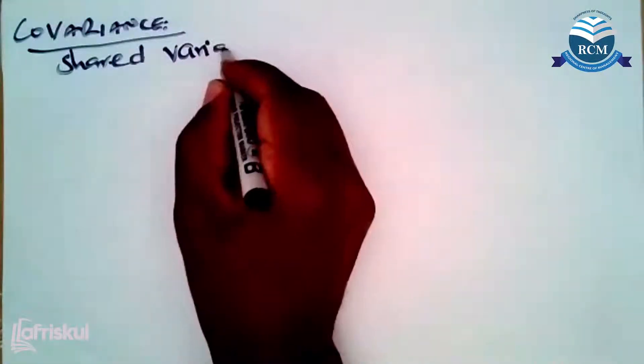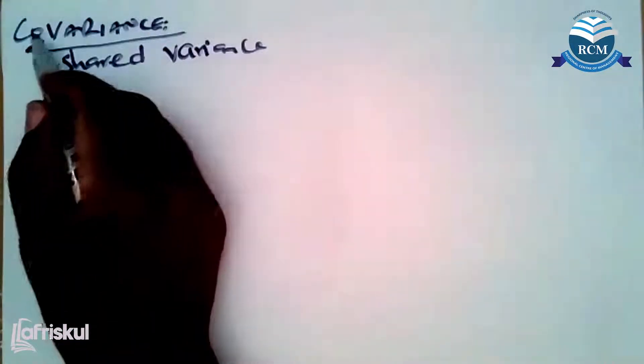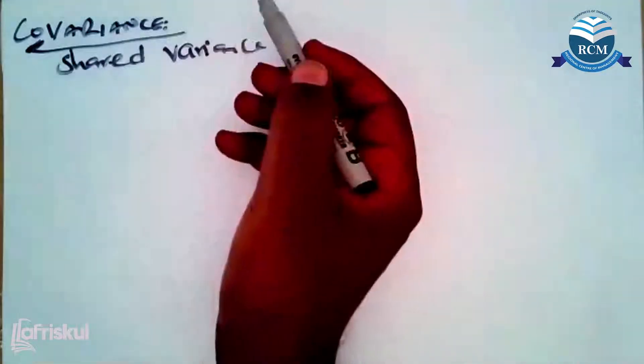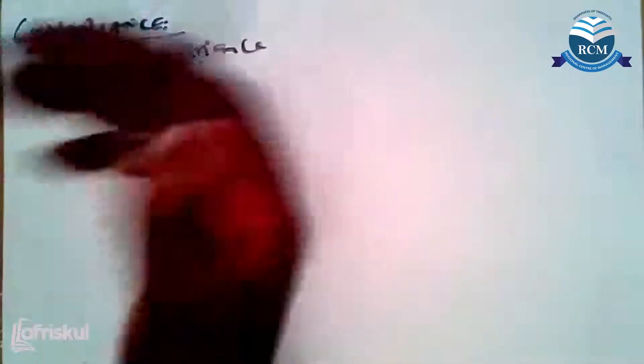Shared variance. Anytime they talk of covariance, always remember the concept of shared. This 'co' of course has a meaning - common, it's common between securities. If you hear of a bad word like co-wife, it must be something common. So covariance is the shared variance.